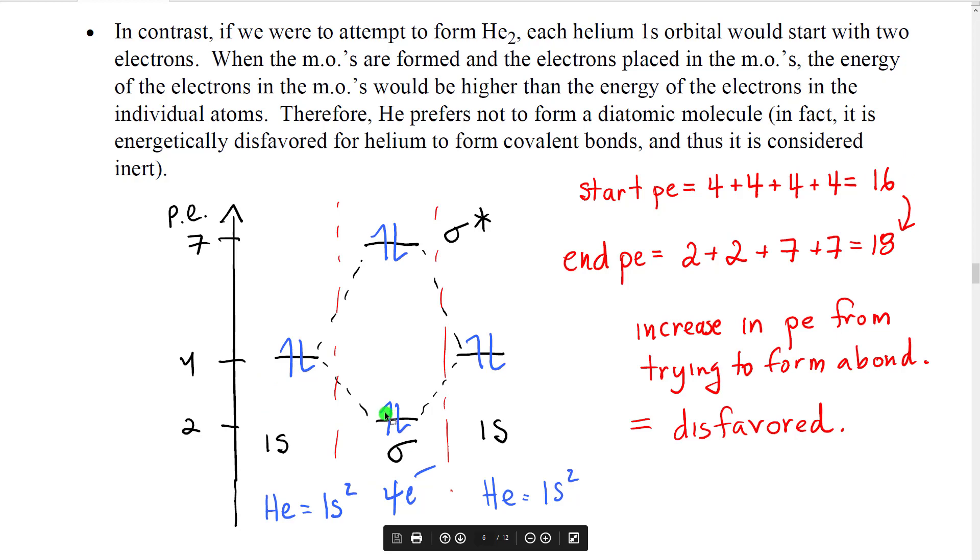We would then take those four electrons, we would fill them in, one, two, okay, but we still have two, so we have to go up to the next higher orbital, three, four, and we would get an electron configuration that would look like this, sigma two, sigma star two. We would then calculate the potential energy. Potential energy would be two for this electron, two for that electron, seven for this electron, seven for that electron. So it would be two, plus two, plus seven, plus seven. Turns out that adds up to 18.